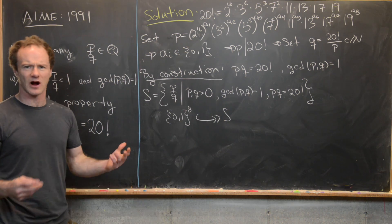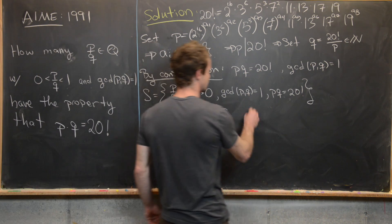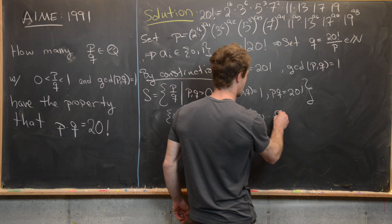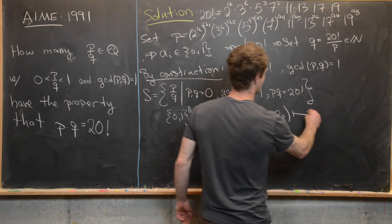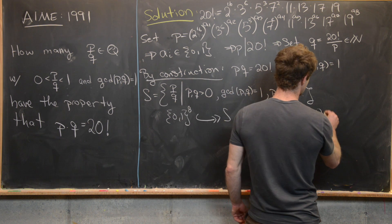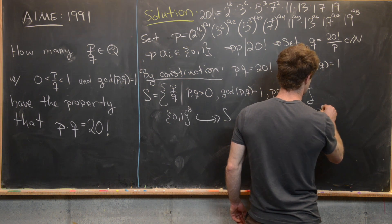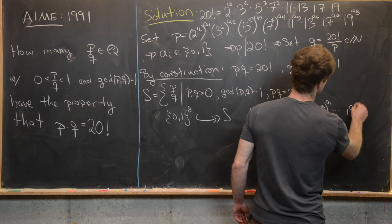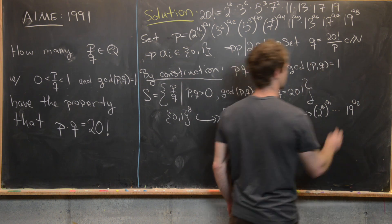And so we can describe this map pretty easily. Notice this map is just going to be A1 up to A8 gets mapped to 2 to the 16 to the A1 all the way up to 19 to the A8.